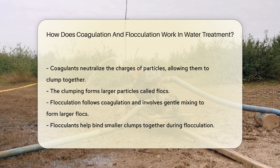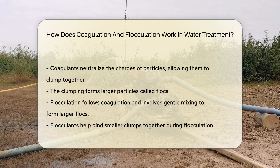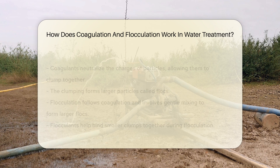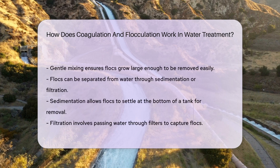Flocculation follows coagulation and involves gentle mixing to form even larger flocs. This process uses flocculants, which are substances that help bind the smaller clumps together. The gentle mixing ensures that the flocs grow large enough to be removed easily.